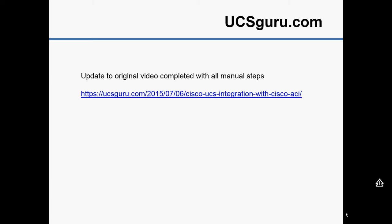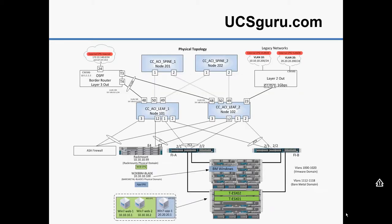Since my last video, Cisco have introduced lots of nice wizards and canvas for drag-and-drop configuration, so I thought I'd update this video to show all those nice features. In these bite-sized series, the videos are meant to be very short and punchy, just showing a particular element of ACI configuration. This video we're going to concentrate on the UCS integration along with the VMware integration.